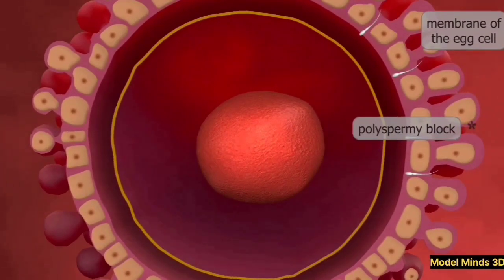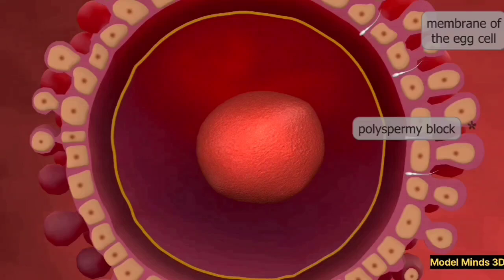At the moment of conception, the zygote contains 46 chromosomes — 23 from each parent — which determine traits such as eye color, hair color, and even certain health factors.